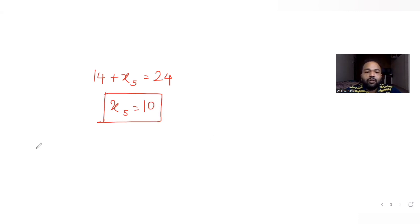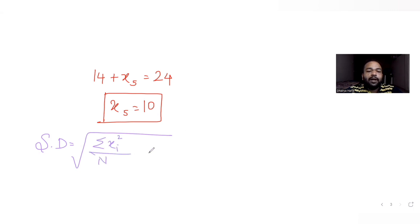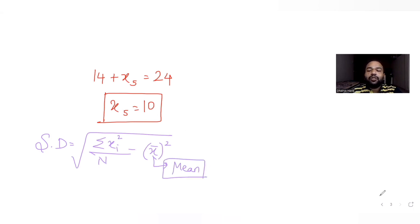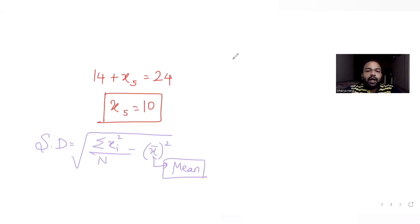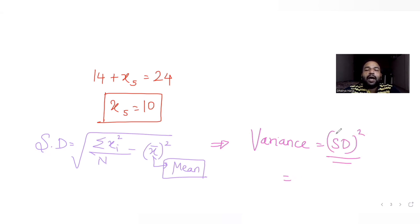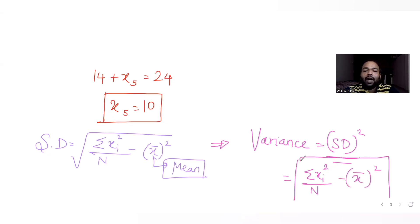Now let's use the idea of variance. We know standard deviation is given by the square root of (summation of xi squared divided by n, minus x-bar squared). Variance is the square of the standard deviation, so variance equals summation of xi squared divided by n, minus x-bar squared. Let's use this for both conditions.